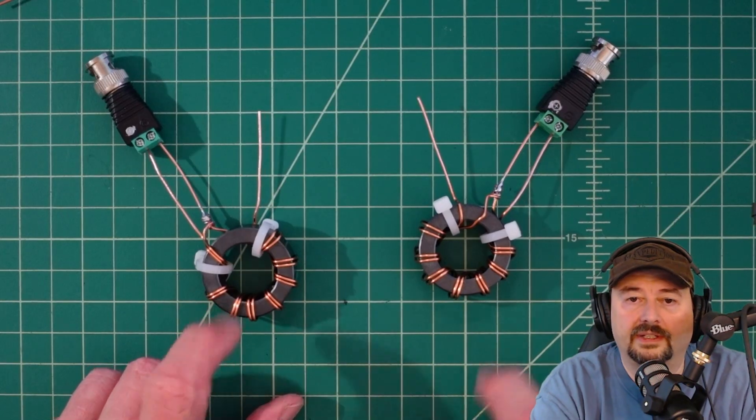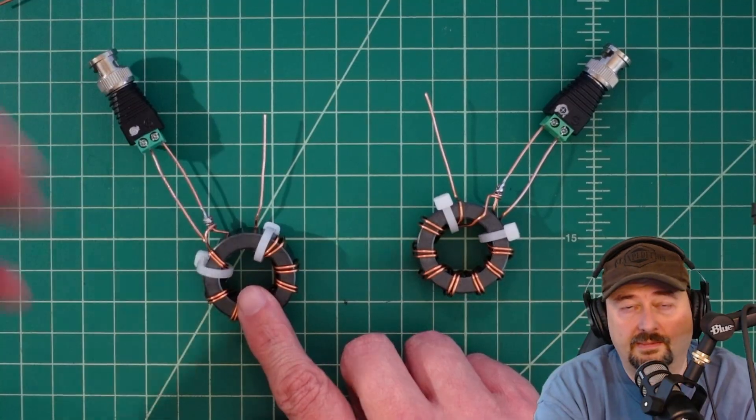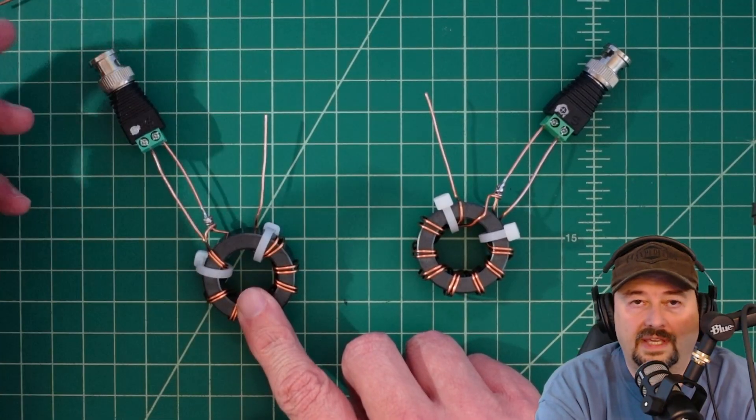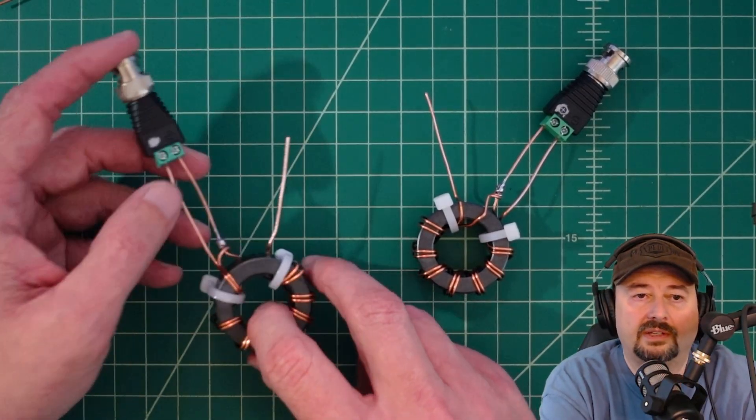Here's our balun and here's our unun. Let's talk about the difference. This is the connection that is going to mimic our connection to our coaxial cable or unbalanced line. That's the same case for both of them.